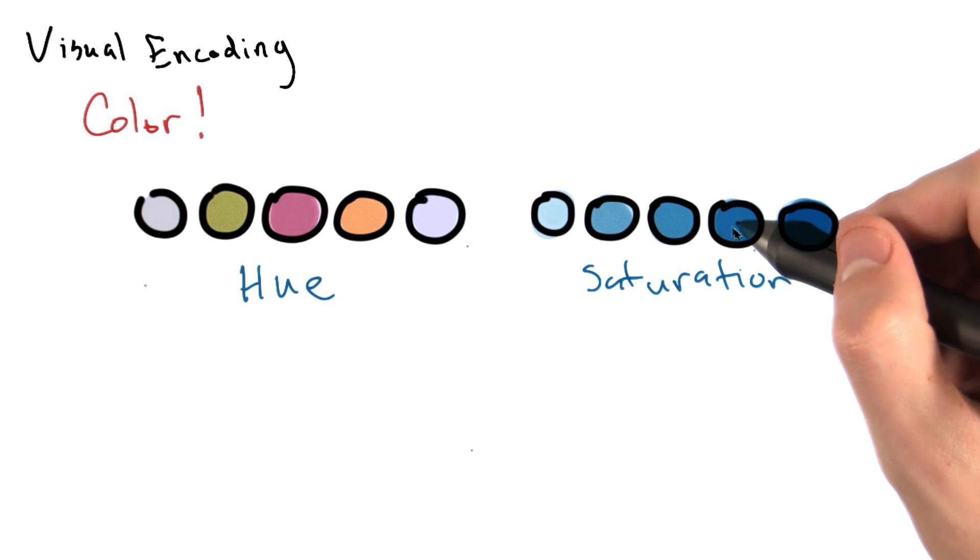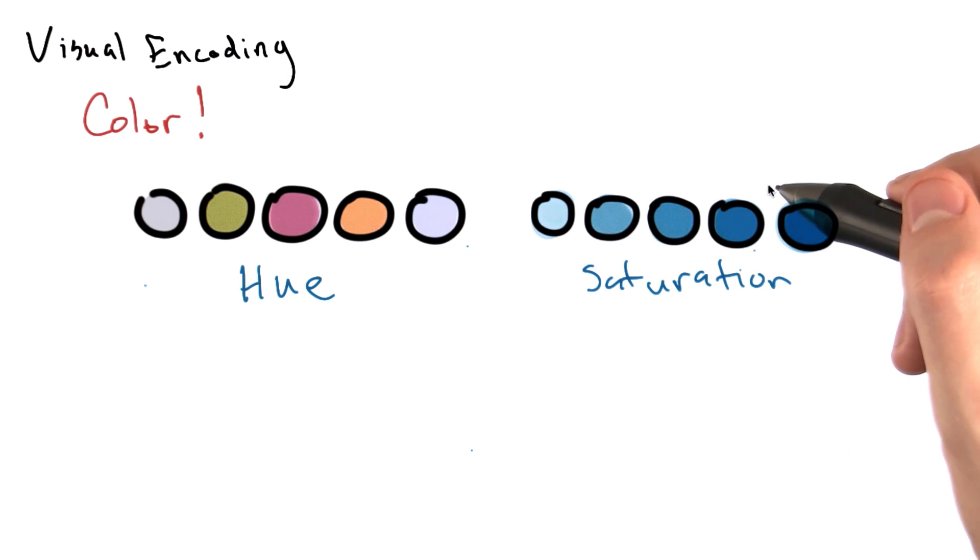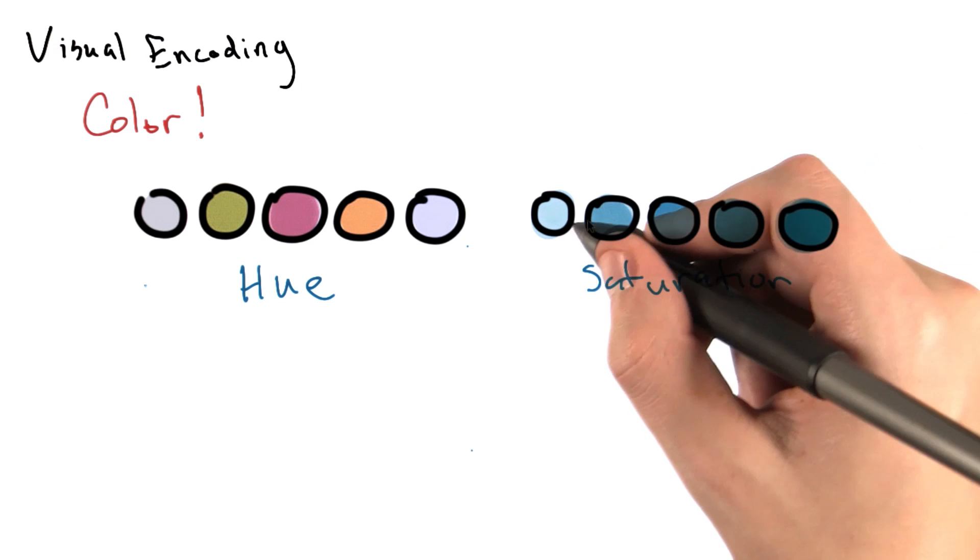Saturation is the intensity of color for a given hue. So if your selected color was blue, high saturation would be very blue, and the color would look faded as you decrease your saturation.